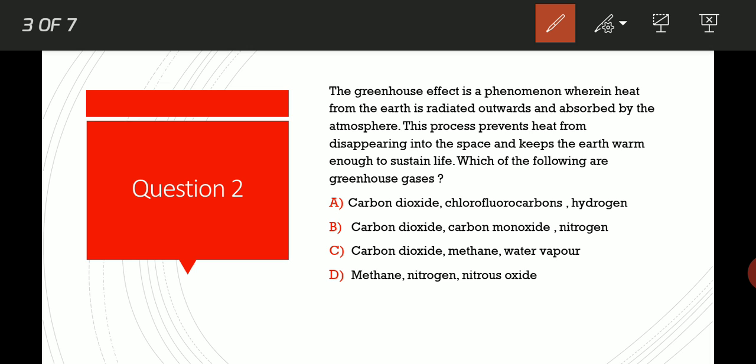Coming to our next question, Question 2. The greenhouse effect is a phenomenon wherein heat from the earth is radiated outwards and is absorbed by the atmosphere. This process prevents heat from disappearing into space and keeps the earth warm enough to sustain life. Which of the following are greenhouse gases? Option A: Carbon dioxide, chlorofluorocarbons, hydrogen.